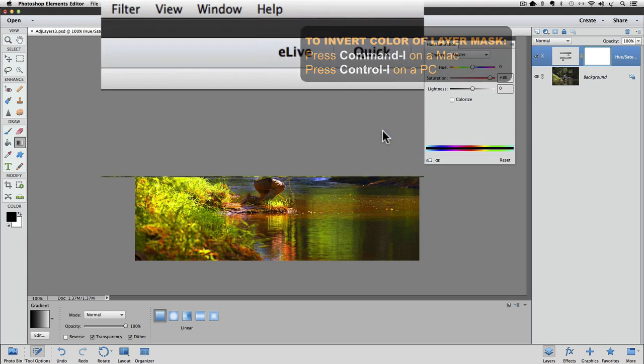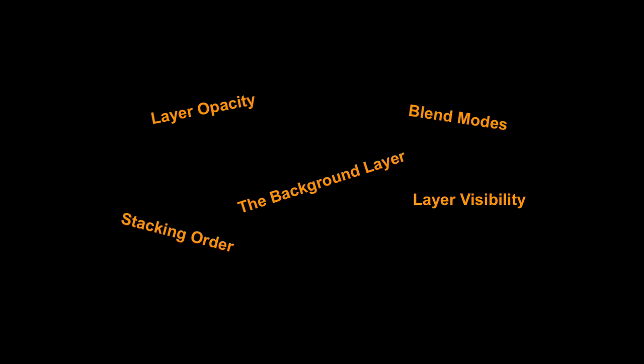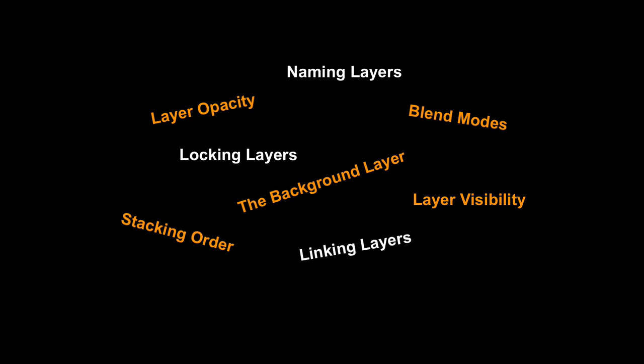I broke the course down into five sections. Section 1 answers the questions: what are layers, and how do they work? We'll look at important basics like the background layer, layer visibility, stacking order, layer opacity, and blend modes. In this section, you'll also discover how to link layers, lock layers, and name layers.